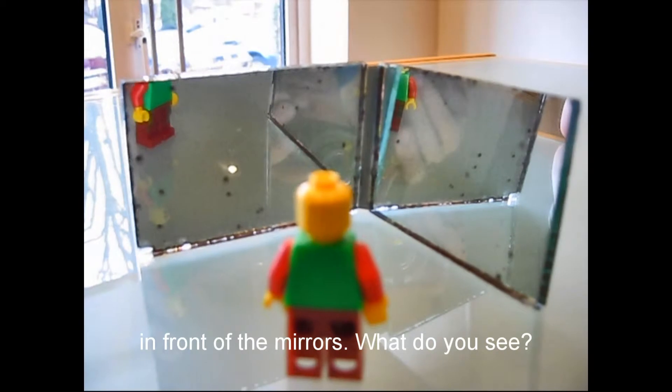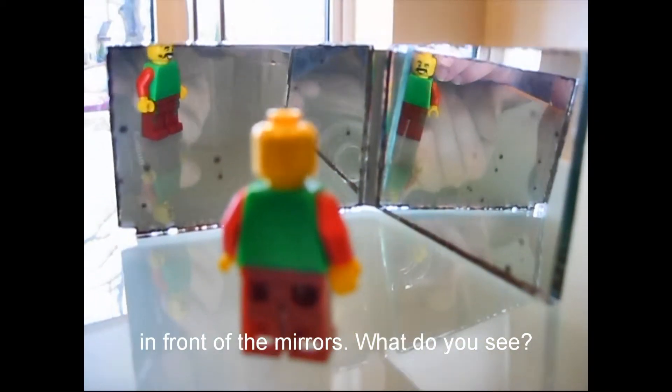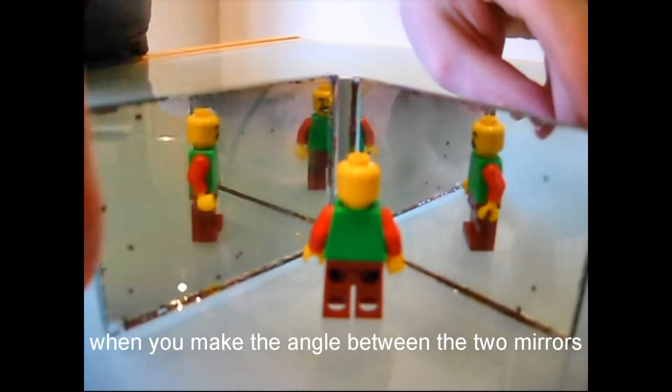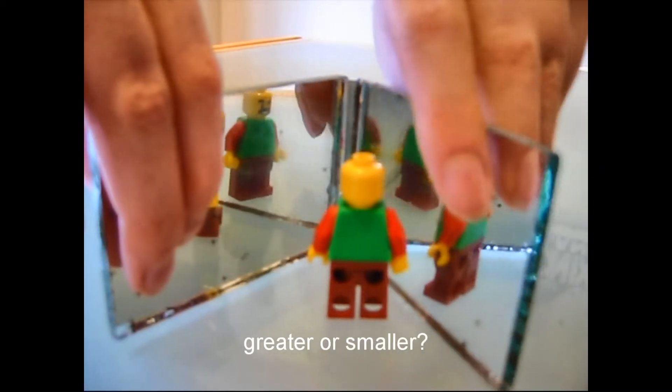Place a small object like a Lego man in front of the mirrors. What do you see? What happens to the number of objects you see when you make the angle between the two mirrors greater or smaller?